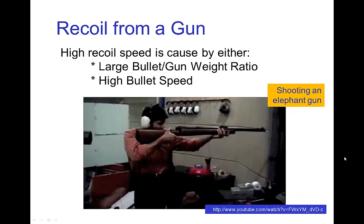So we get a large recoil speed either when the ratio of the bullet weight to the gun weight is large. In other words, if it's a large bullet, we tend to have a high recoil speed, high recoil force. And also if the speed of the bullet is high, then we have a lot of recoil.